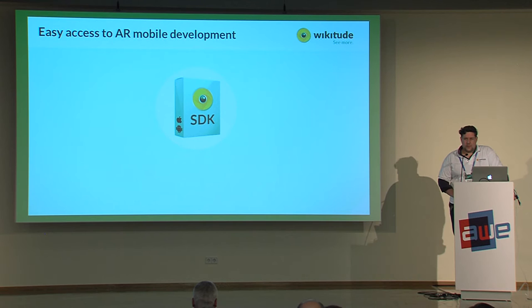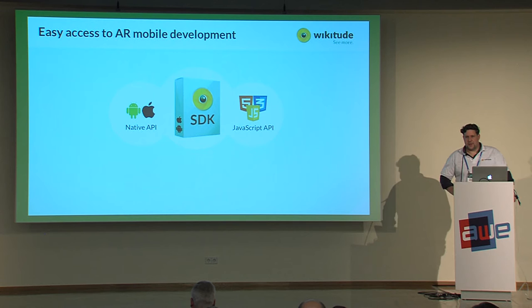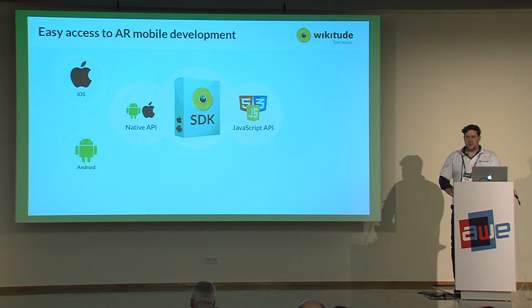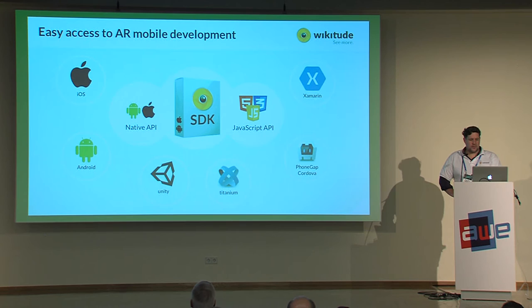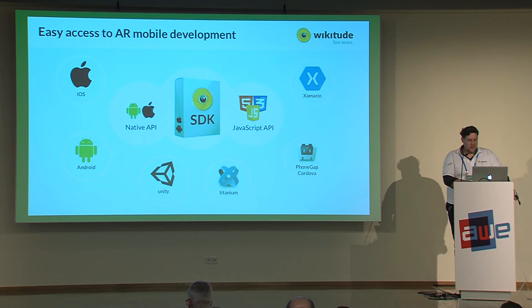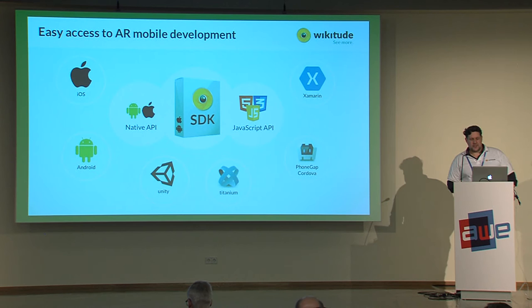The SDK comes in two flavors. On one hand, the native API for Android and iOS. On the other hand, the JavaScript API built on top of that. Unity is another option based on the native API, as well as Titanium, PhoneGap and any Cordova-based frameworks, and Xamarin for those who want to program in C#. The Wikitude SDK is available as a wrapper, plugin, or extension for all of those tools.